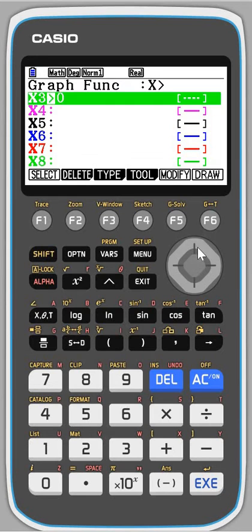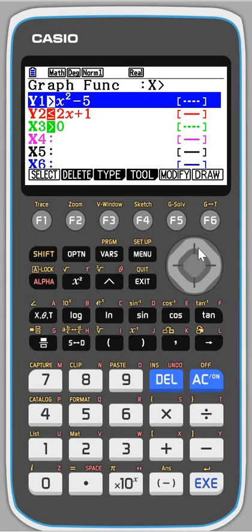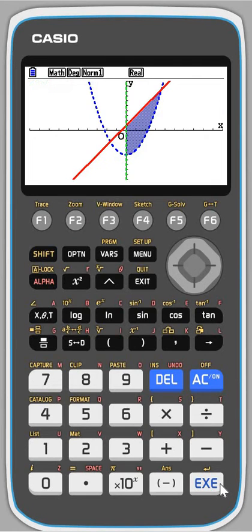OK, so I now have three inequality graphs on there and I'm going to draw those graphs. Right. And you can see that it's shaded the exact inequality that is true for all of those.